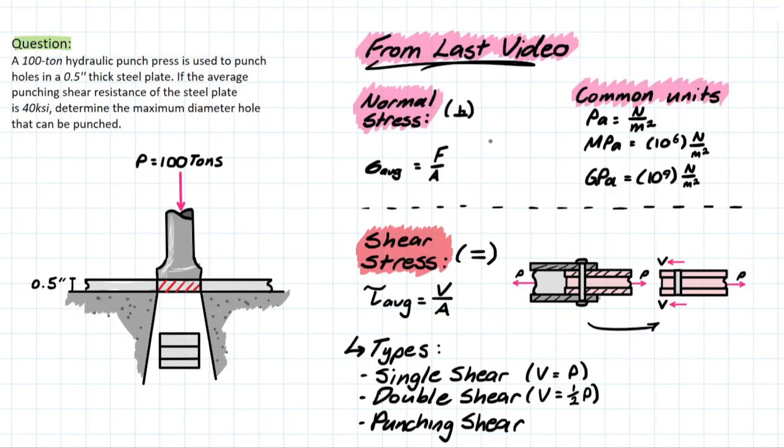The last video we covered normal stress in the example, and you can click the top if you want to see that video. But pretty much we just talked about using this formula, which is the normal stress average equals the magnitude of force over the cross-sectional area perpendicular to the force applied.